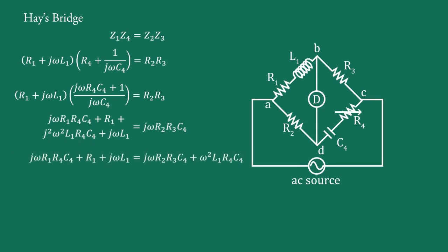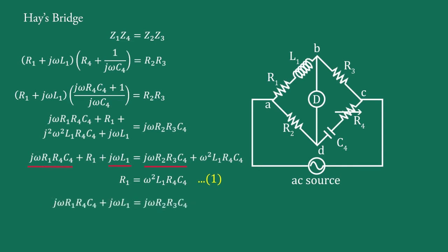Now equating real and imaginary parts: for the real part, R1 equals omega²·L1·R4·C4 — call this equation 1. For the imaginary part, j·omega·R1·R4·C4 + j·omega·L1 equals j·omega·R2·R3·C4. Canceling j·omega throughout, we have R1·R4·C4 + L1 equals R2·R3·C4 — call this equation 2.